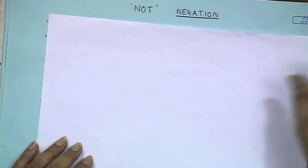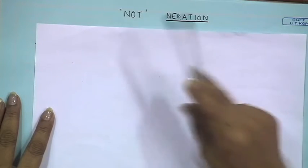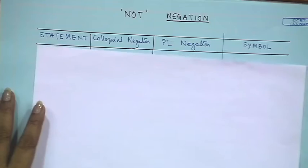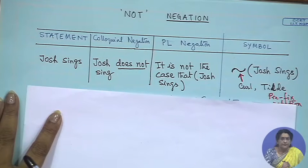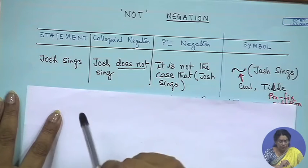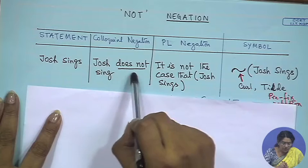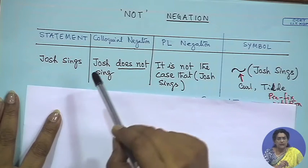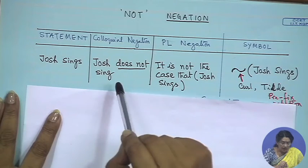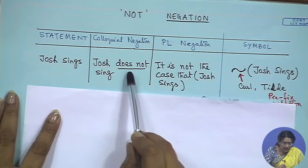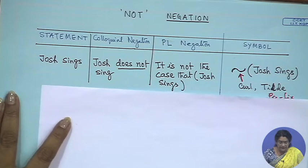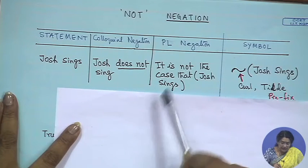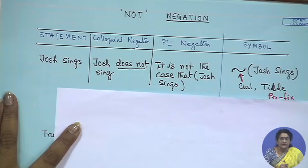The first connective is 'not,' which we also call negation. How does it work? Consider the proposition 'Josh sings.' If we attach the 'not,' colloquially we say 'Josh does not sing' — the 'not' attaches with the verb. But that is not how PL negation works. In PL, negation attaches itself at the beginning of the sentence, using prefix notation: 'It is not the case that Josh sings.'